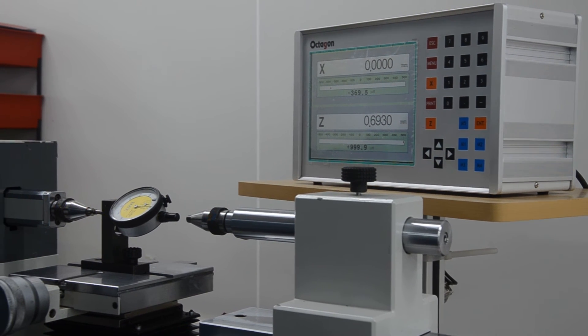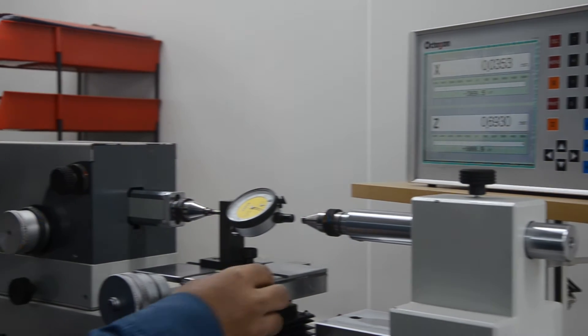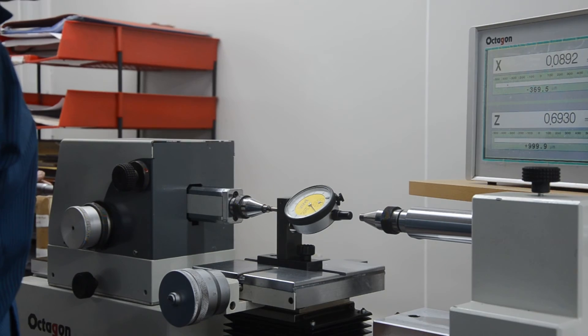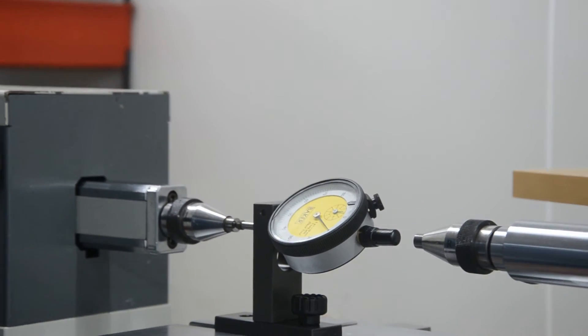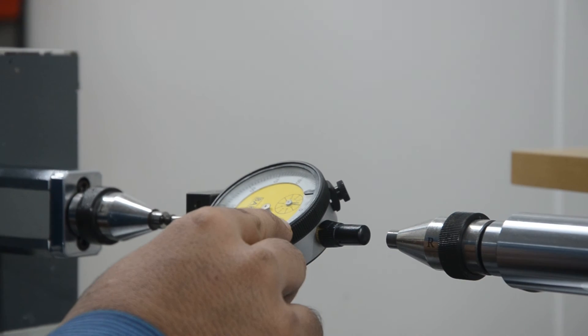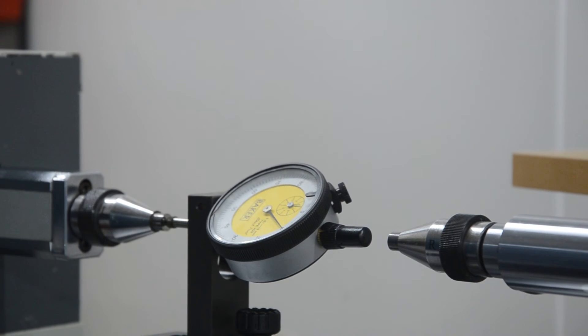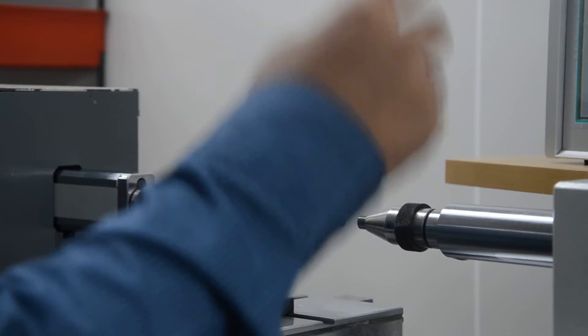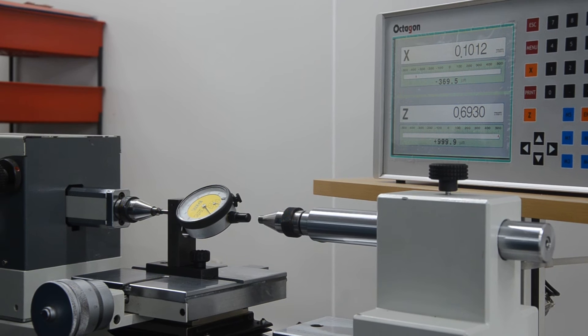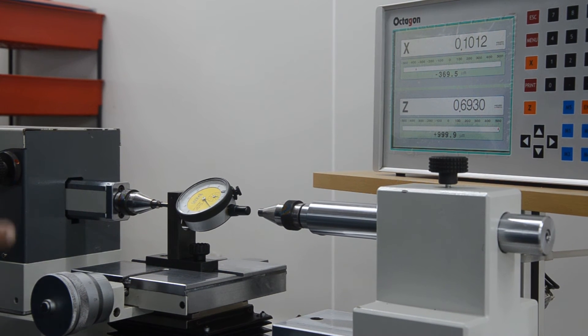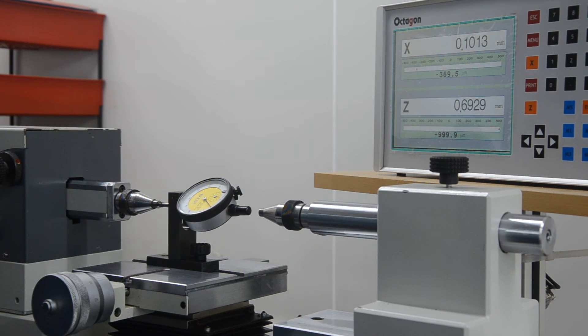Now just turn this attachment till the pointer reaches 10. Now this is the point which is representing 0.1 mm. On this point, the display is showing the reading of 0.1012 mm. That means 1.2 micron is the error which is present at this particular point.